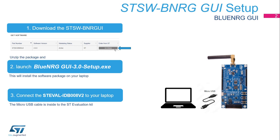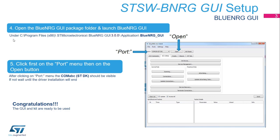Unzip the package and launch the BlueNRG GUI setup.exe file. Wait until the installation ends. Connect the STSW-BNRGUI to your laptop using the micro-USB cable inside the eval kit. Open the BlueNRG GUI under C:\Program Files (x86)\STMicroelectronics\BlueNRG GUI 2.6.0\Application\BlueNRG GUI. Click first on the Port menu, choose the proposed COM port labeled STDK and click on the Open button. Note that the COM number can vary from laptop to laptop. If the COM port is not available, wait until the driver installation procedure completes and repeat this procedure again.